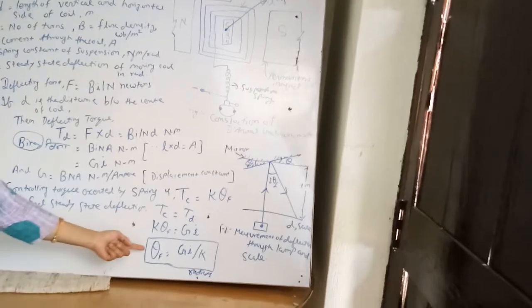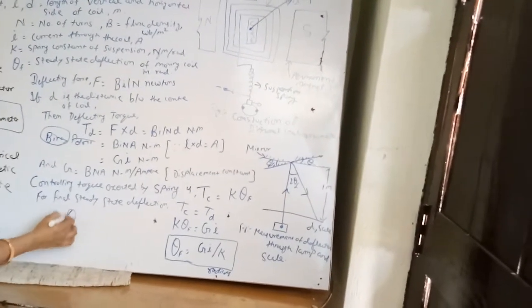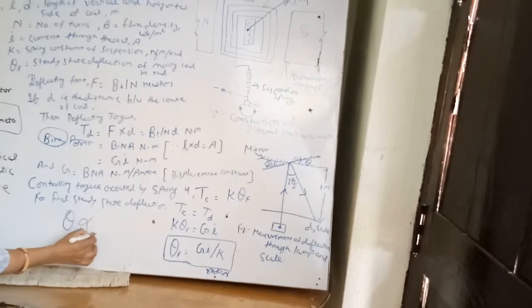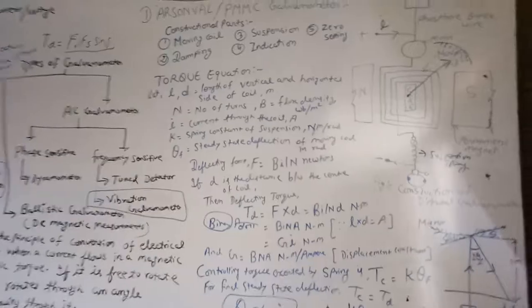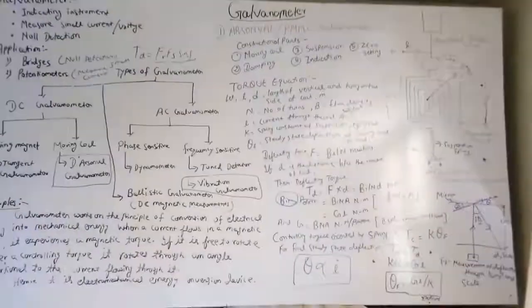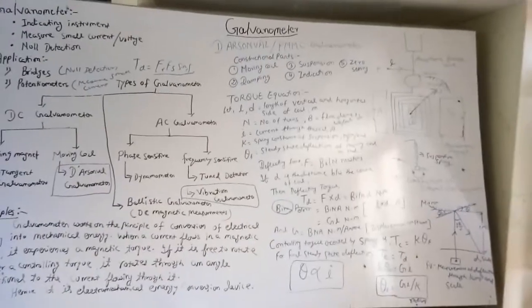That is, how much current is provided determines how much theta is deflected — theta is directly proportional to I. In the next class, we will study about the damping behavior of the galvanometers. Thank you.